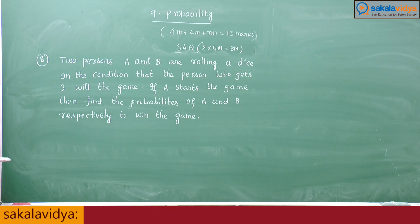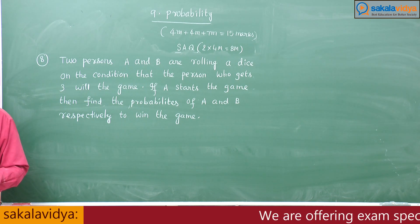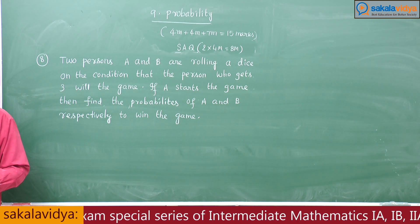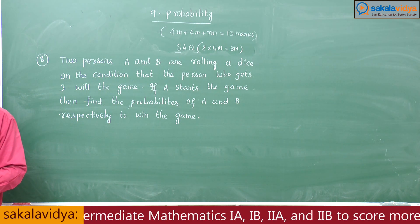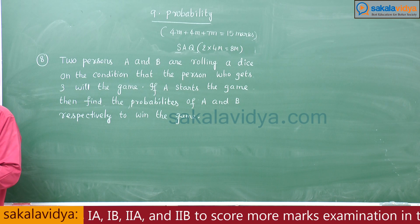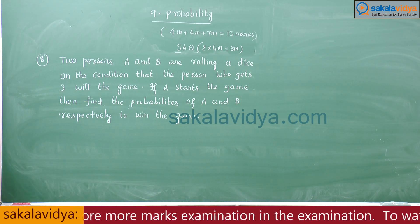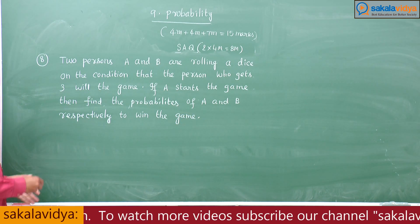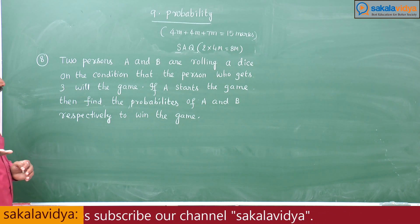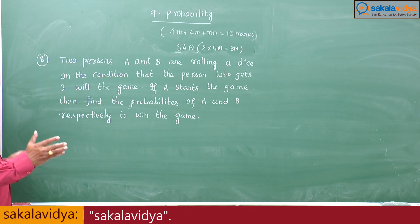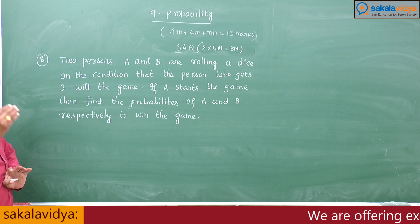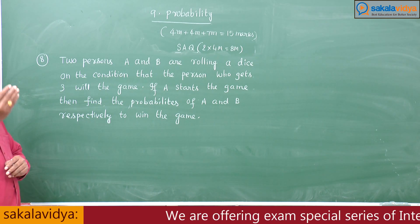Let us go to the problem clearly and read once again. If A rolls a dice and gets three, he will be the winner. The probability of success depends on getting three when a dice is rolled.